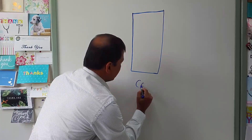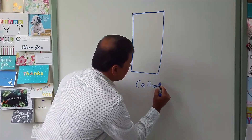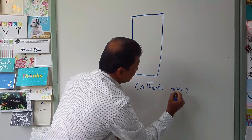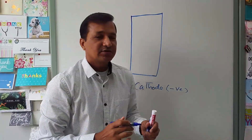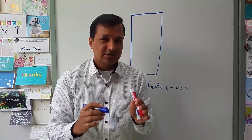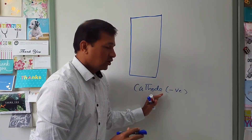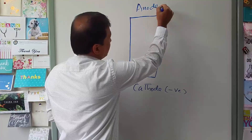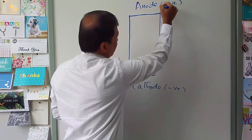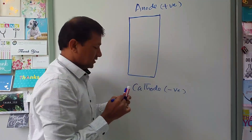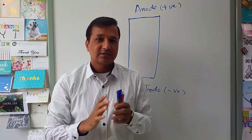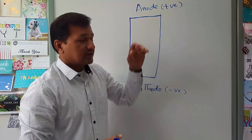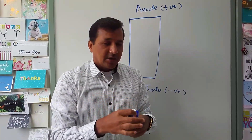The very first thing you should remember is what is cathode and what is anode. Cathode is a negatively charged electrode — this is the one that can be confusing. Anode is a positively charged electrode. You must remember: cathode is negative and anode is positive.